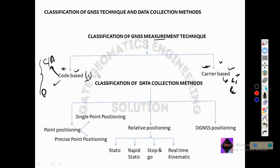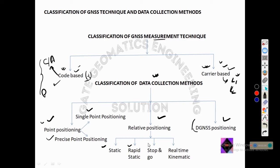Based on the data collection method, GNSS systems can be classified into point positioning, relative positioning, and DGNSS — Differential GNSS — positioning, for which we will do a separate video. Point positioning has two types: standalone single point positioning and precise point positioning. Relative positioning has four types: static, rapid static, stop-and-go, and real-time kinematic. In the next video we will learn about the various types of measurement techniques and data collection methods in detail.